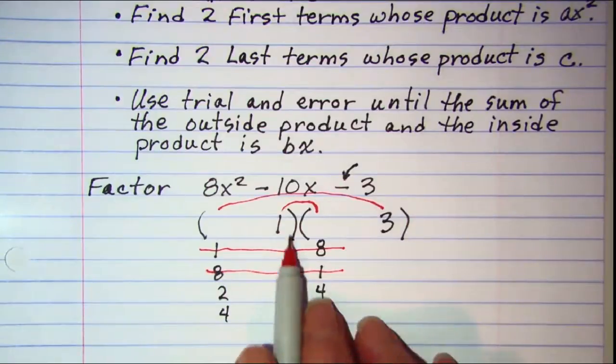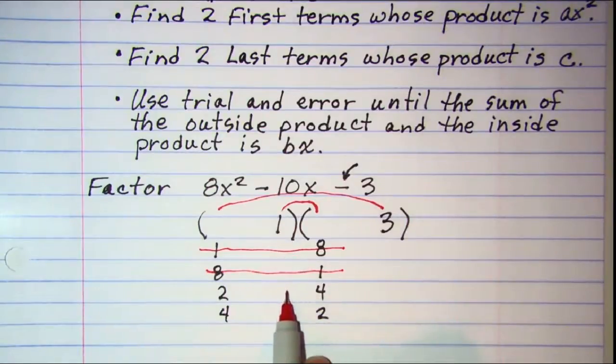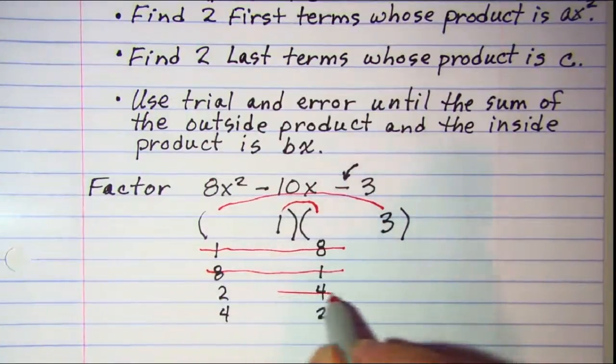For this one, I have an inner product of 4 and an outer product of 6. 4 subtract 6 is a difference of 2, so this one's not working either.